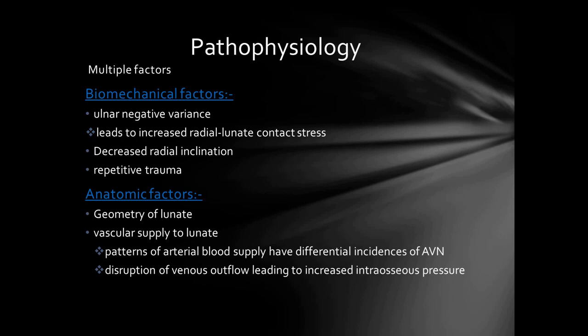In the anatomical factor, there may be abnormal geometry of the lunate and the vascular supply to the lunate. The pattern of arterial blood supply has differential incidence of avascular necrosis of the lunate, and disruption of venous outflow leading to increased intraosseous pressure.